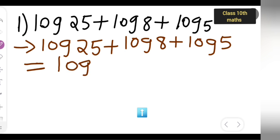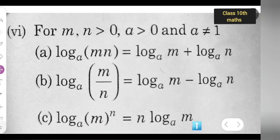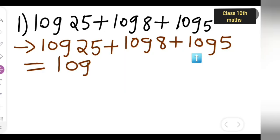So we need to know certain rules to solve this. Plus plus means from the sum rules, we will be applying this rule. So it will be a sum means it will be a product. So log of mn means we have to multiply mn. But here 3 are given, so we need to multiply 25, 8 and 5. So we can multiply 25 multiplied by 8 multiplied by 5.